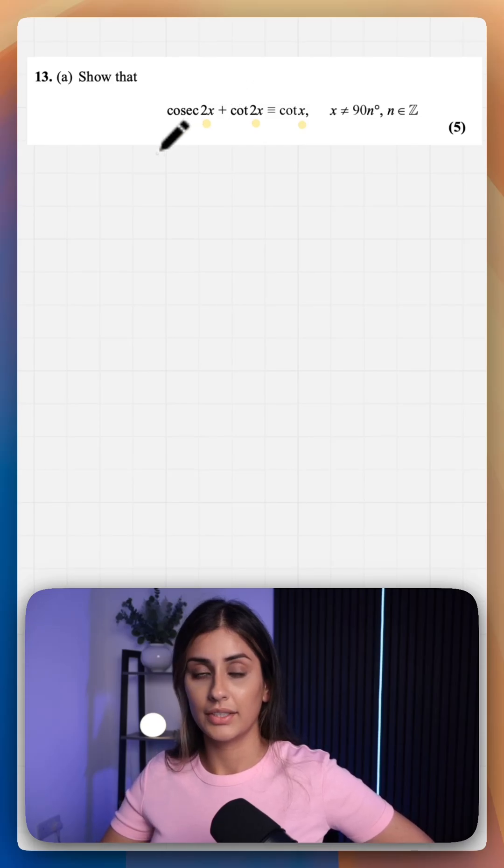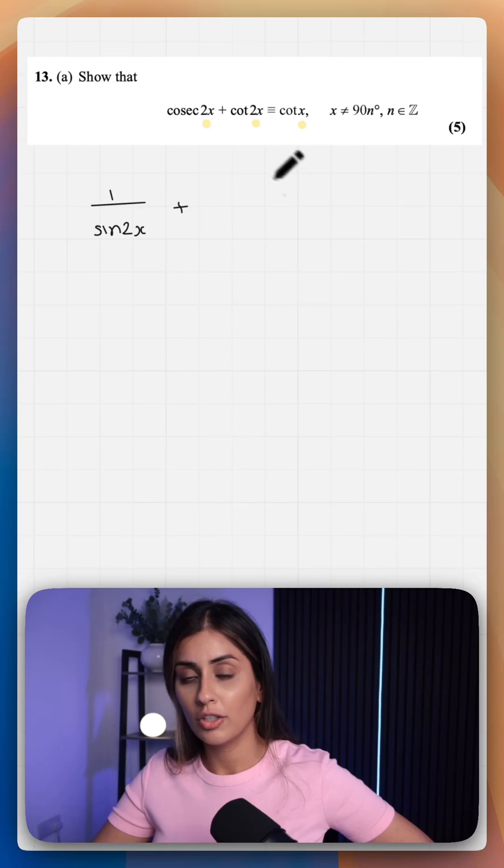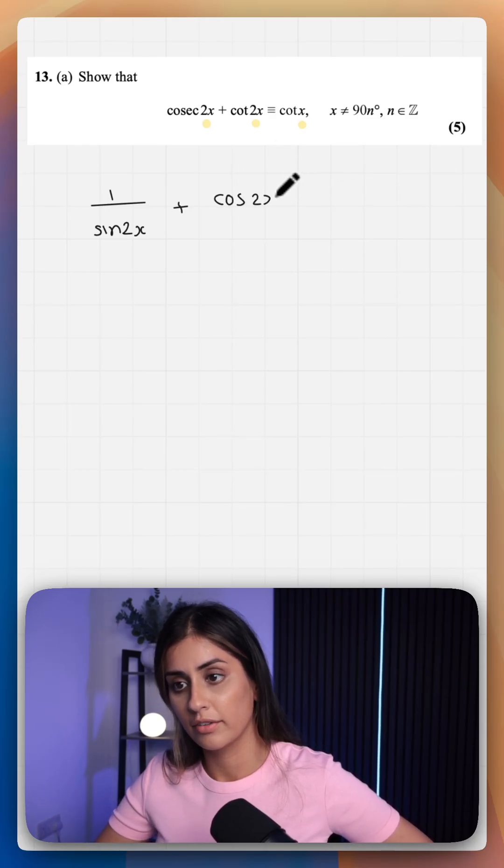Let's start by writing these out as their reciprocal function, so cosec 2x is 1 over sine 2x. cot 2x is 1 over tan, which can be written as cos over sine.